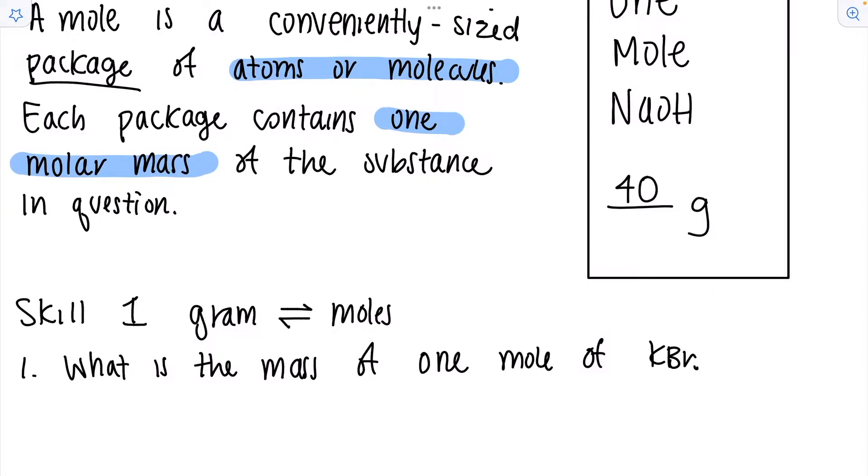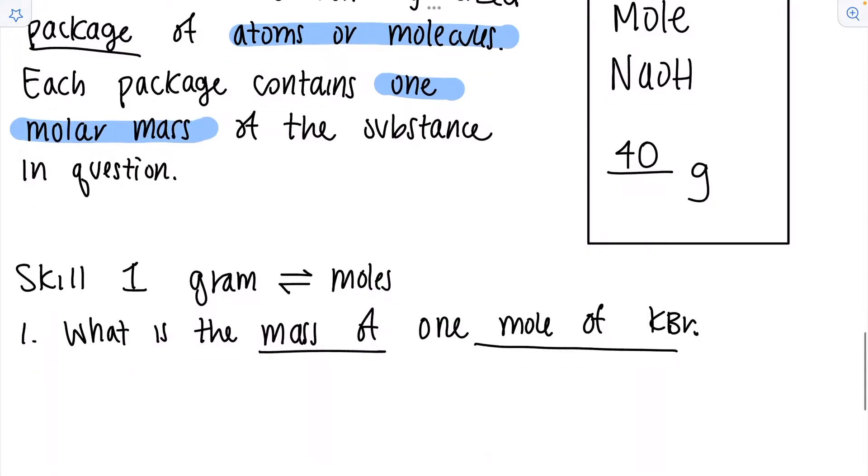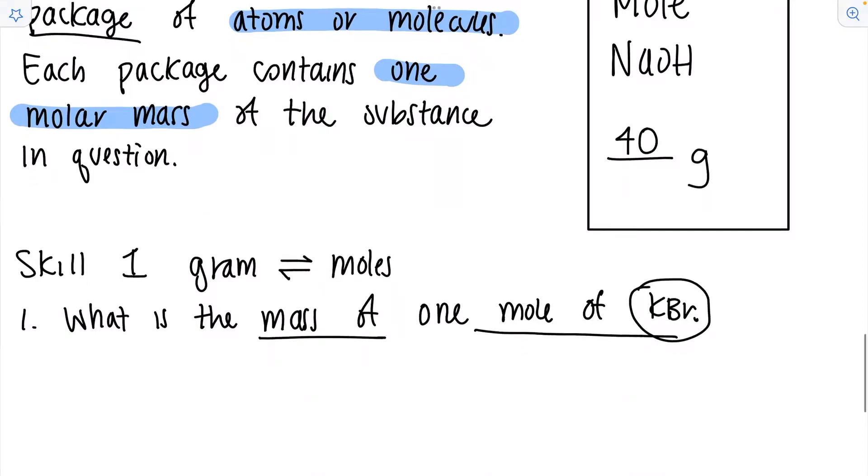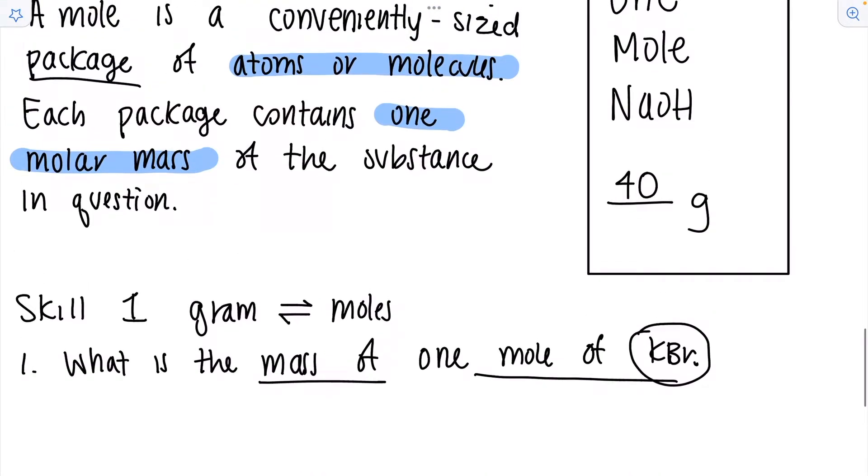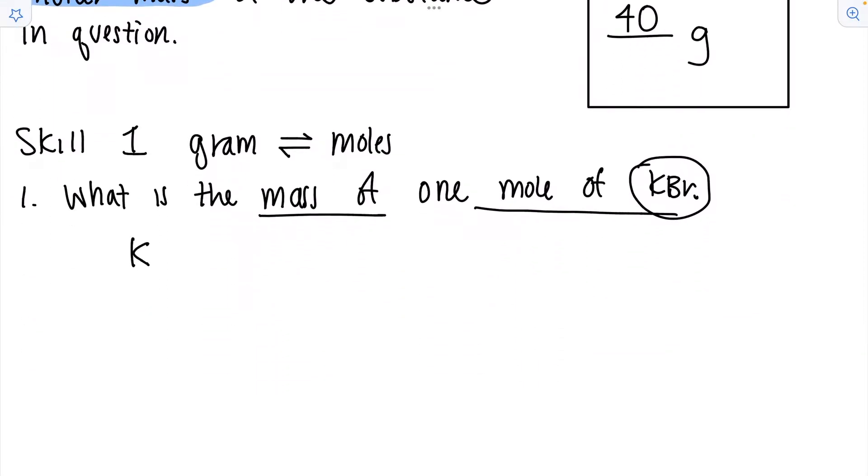Let's do the first one. What is the mass of one mole of KBr? In order to calculate this we need to use our periodic table and calculate the molar mass because the molar mass is the mass of one mole. We look for potassium and the molar mass is 39. We look for Br, the molar mass is 80. We add those together we get 119 grams per mole.